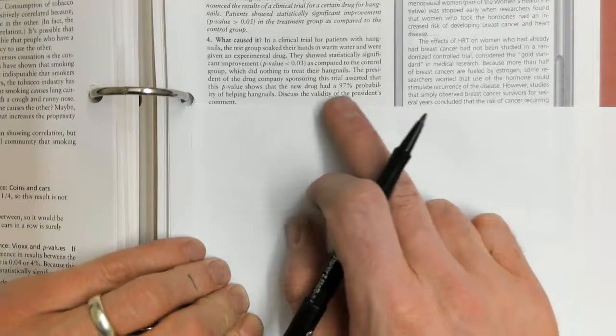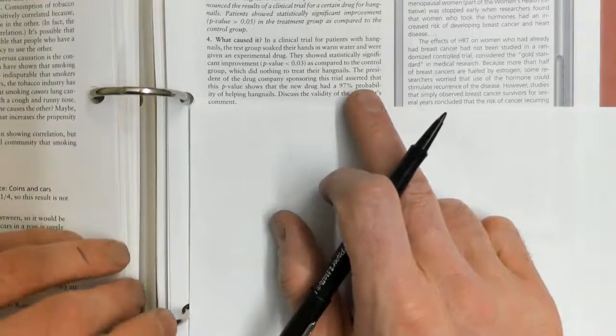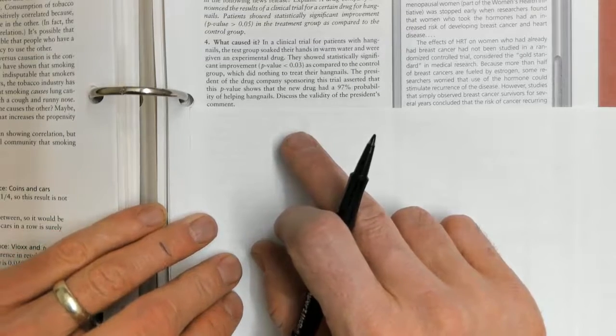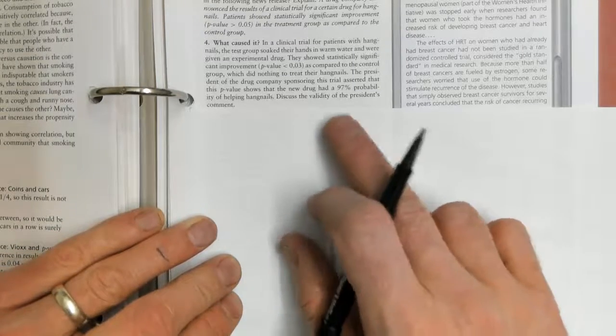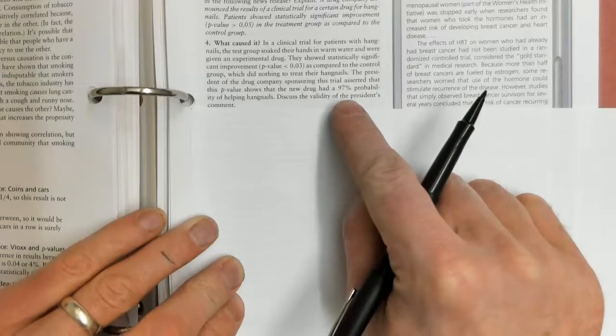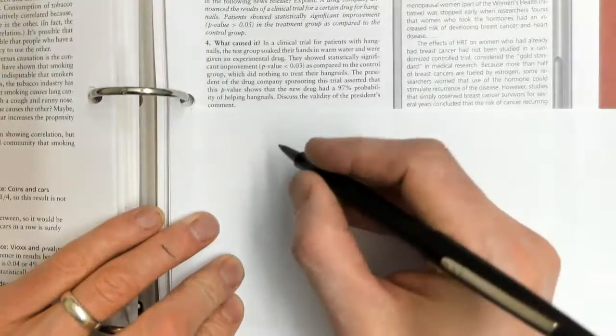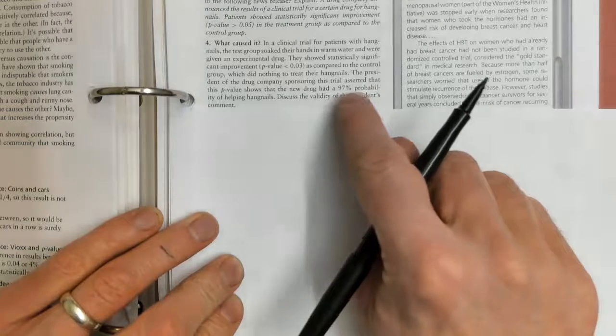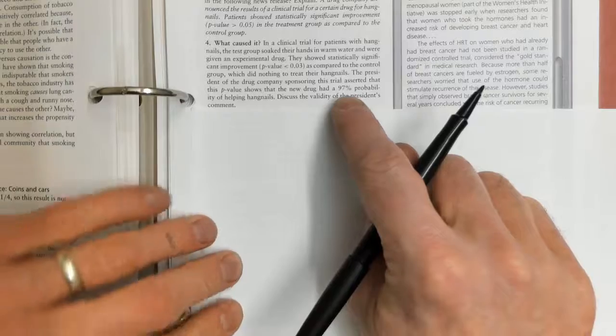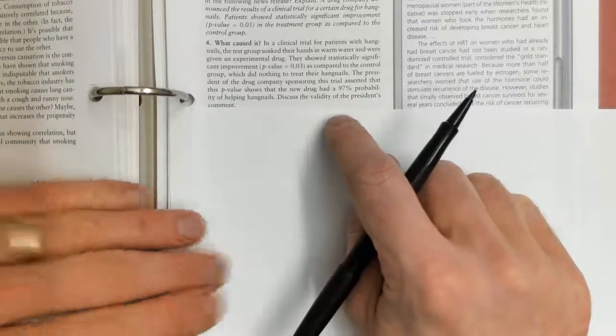The president of the drug company sponsored this trial and asserted that this p-value shows the new drug had a 97 percent probability of helping hangnails. The trick is that the president's statement is wrong. It's not that simple.